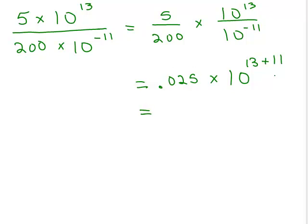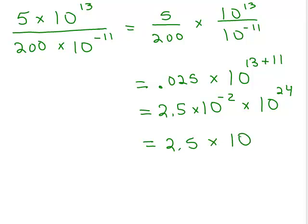This isn't quite in scientific notation because of this 0.025. I want to rewrite 0.025 in scientific notation. That's 2.5 times 10^(-2), times 10^24. Adding my exponents, this gives me 2.5 times 10^22.